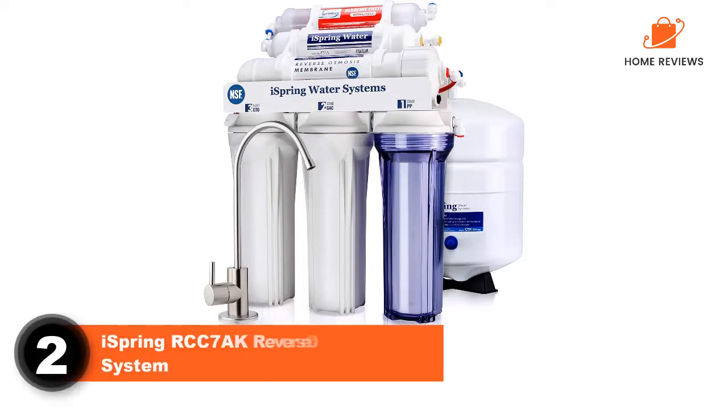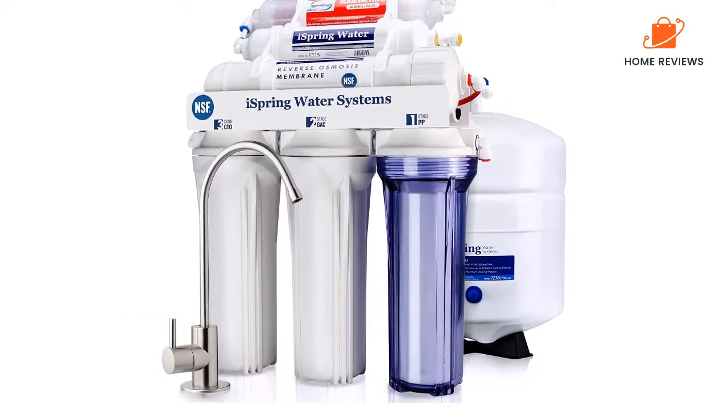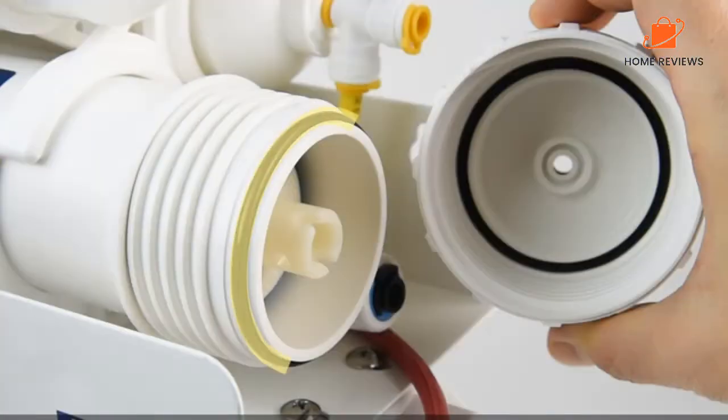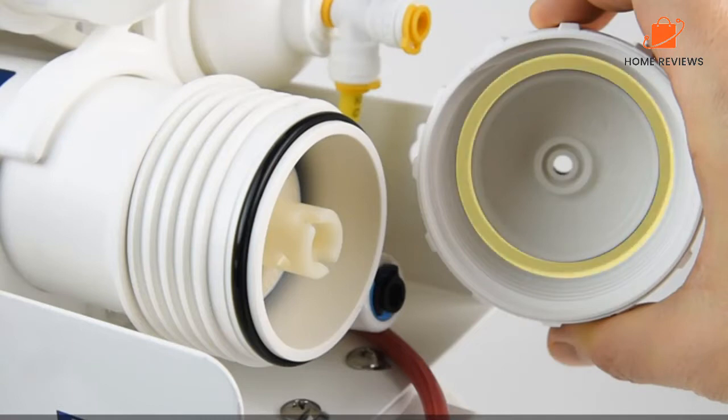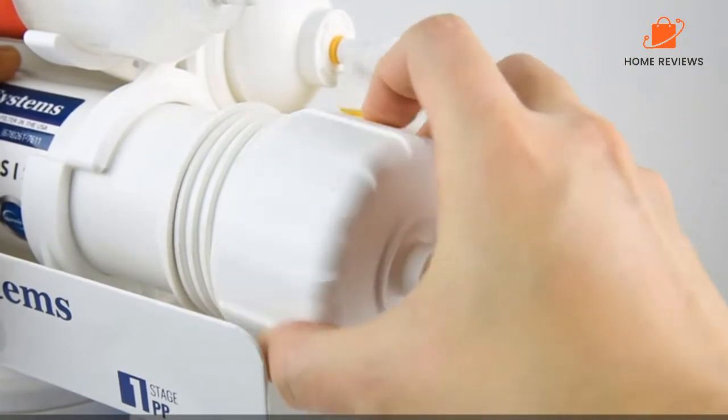Number 2: iSpring RCC7AK Reverse Osmosis System. Since a reverse osmosis membrane removes particles down to 0.1 microns in size, purifying water in this way removes bacteria, sediment, VOCs, and other contaminants. However, it also removes minerals and alters the pH of the water.